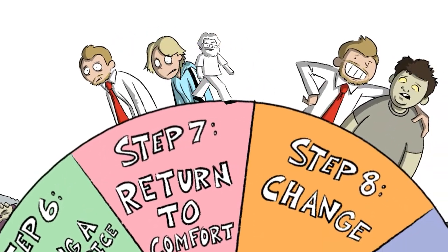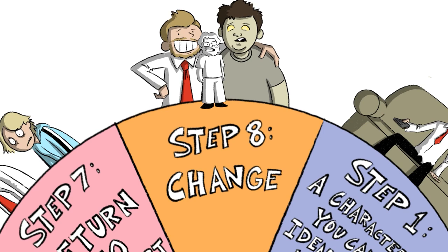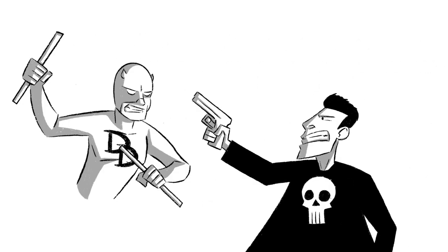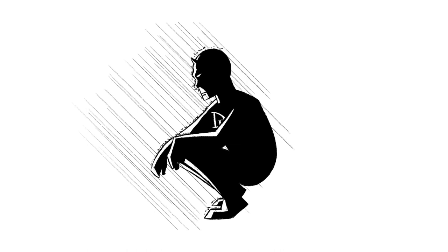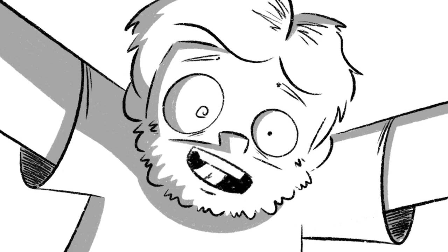Finally, step eight: change. The experience has changed your protagonist — they've learned and grown from the experience. Sometimes this is when the final showdown occurs, one last battle between the protagonist and antagonist. Sometimes it's just a reflection of your protagonist applying what they've learned earlier in the story. This is called the animator — you have to go watch Daredevil, it's so good, it has all the things.